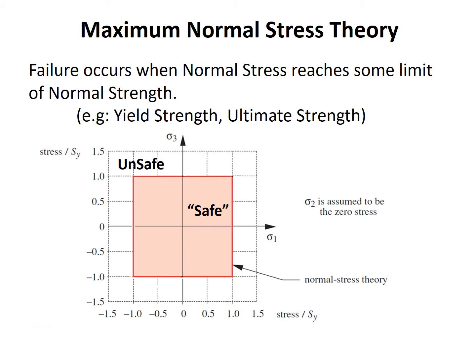Our first theory is the maximum normal stress theory — this is when our normal stress reaches some limit of our normal strength. On our graph we have principal stress 1 and principal stress 3, assuming plane stress with sigma 2 equal to 0. The theory states that when our normal stresses reach a limit beyond our yield strength, we have failure. The factor of safety N equals yield strength divided by our applied or principal stress.